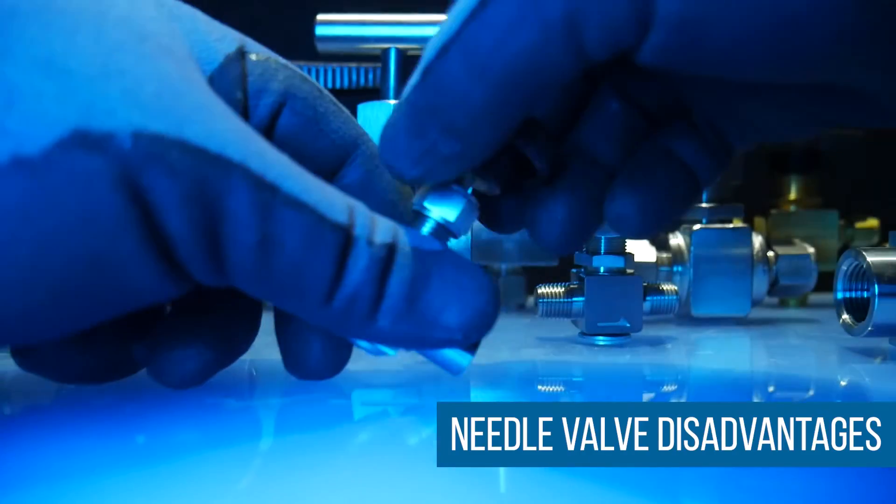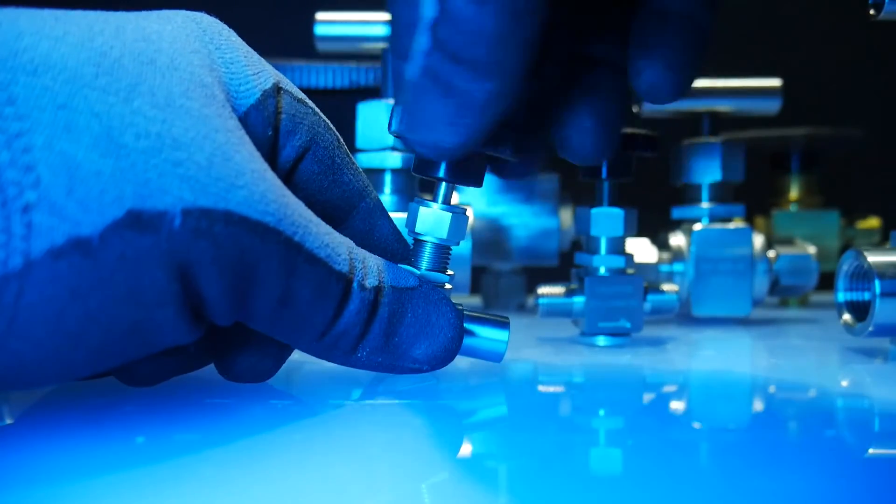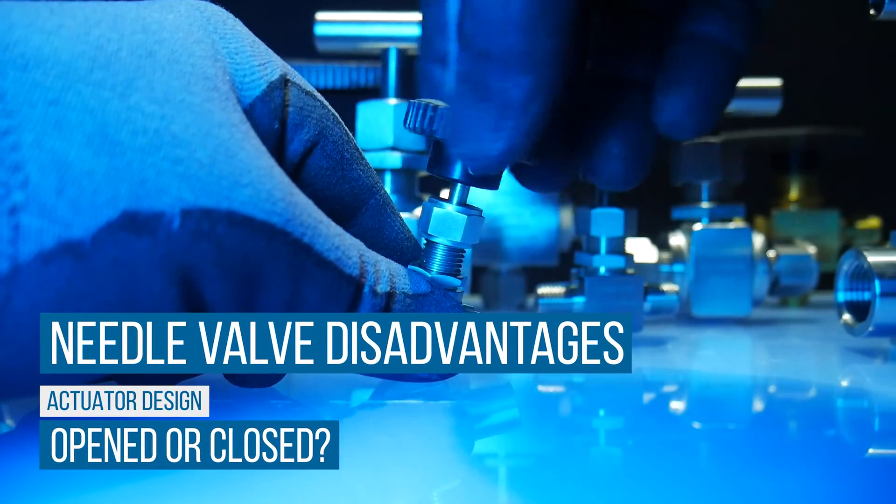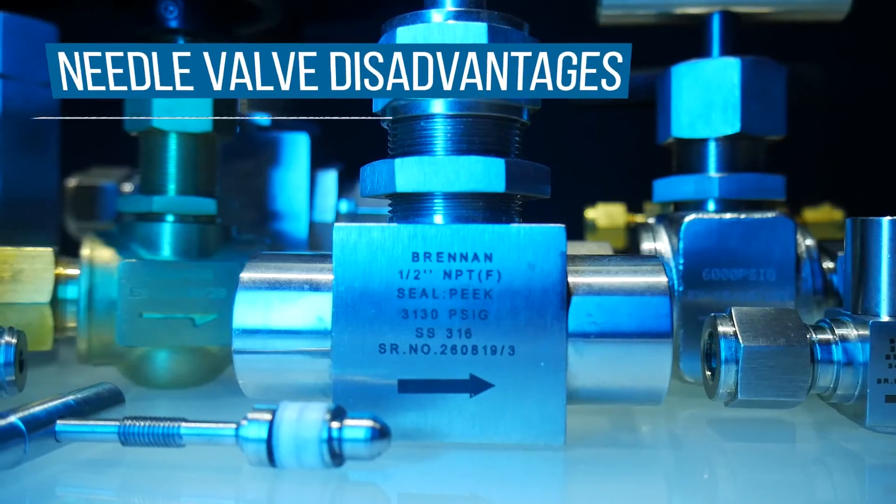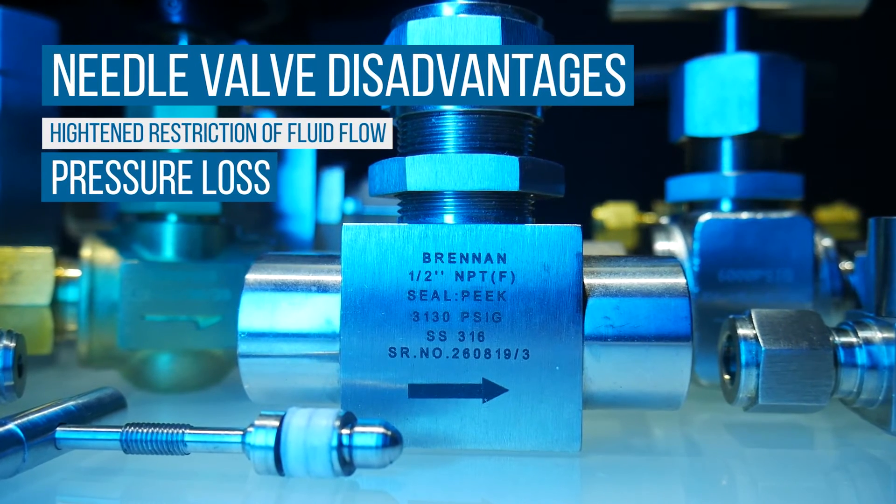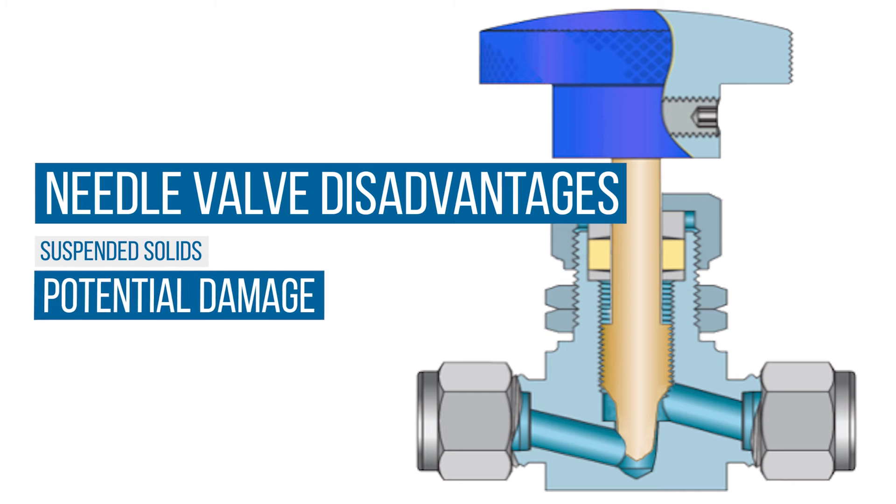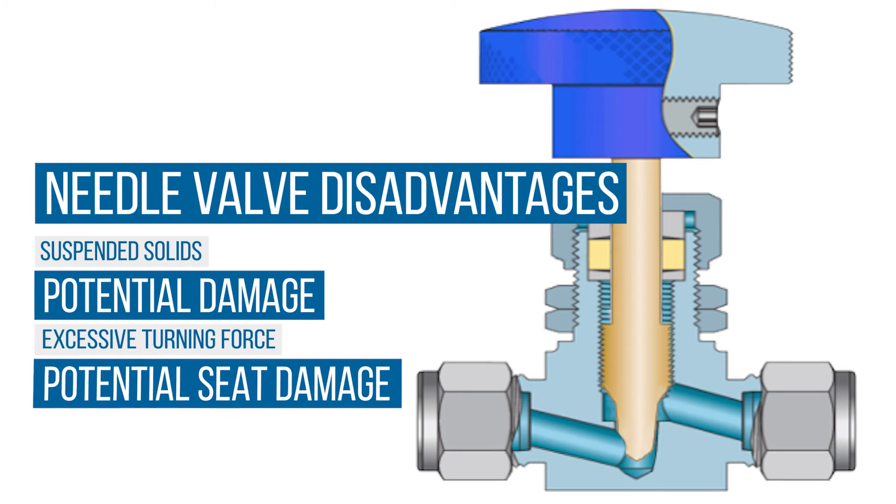There are disadvantages related to instrumentation needle valves. The design prevents visual determination of valve's open or closed position. They experience pressure loss due to the heightened restriction of fluid flow. The seat and the needle could be damaged with suspended solids present in the fluid, and the seat of the needle valve could be damaged due to excessive turning force while closing the valve.